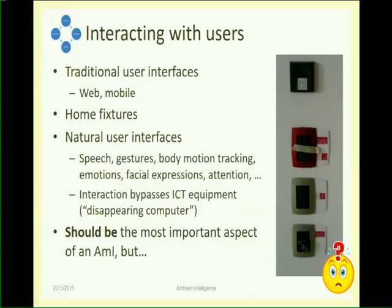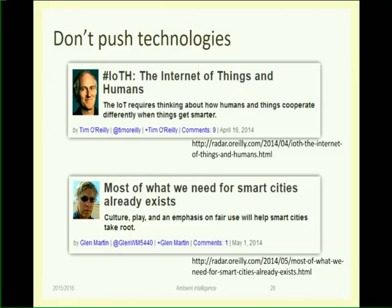Always think about interaction from the beginning, not only at the end. All the technology that we need is already there — what we need is to package it in a way that users will like it. We need to sell services, features, and applications — not technology — to people. This is the step forward that we need to make as engineers to start seeing mainstream products in the Internet of Things, not just toys or very specialized applications.